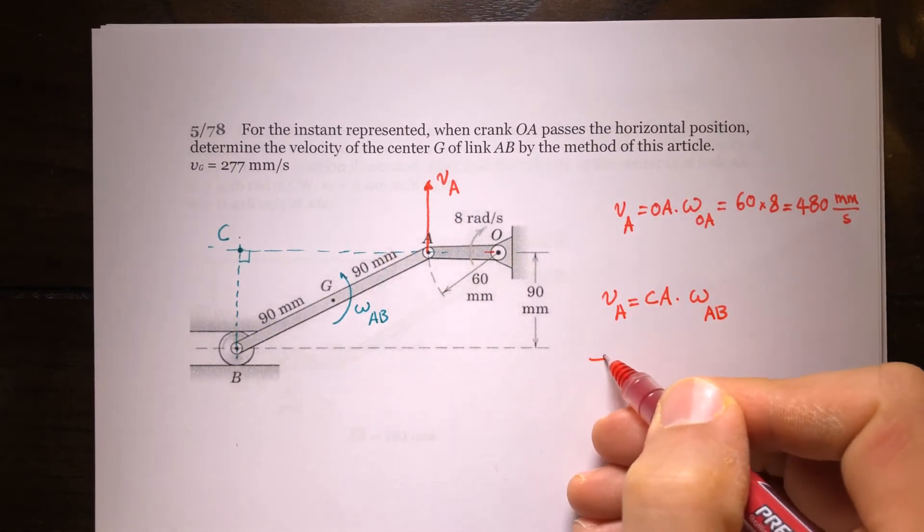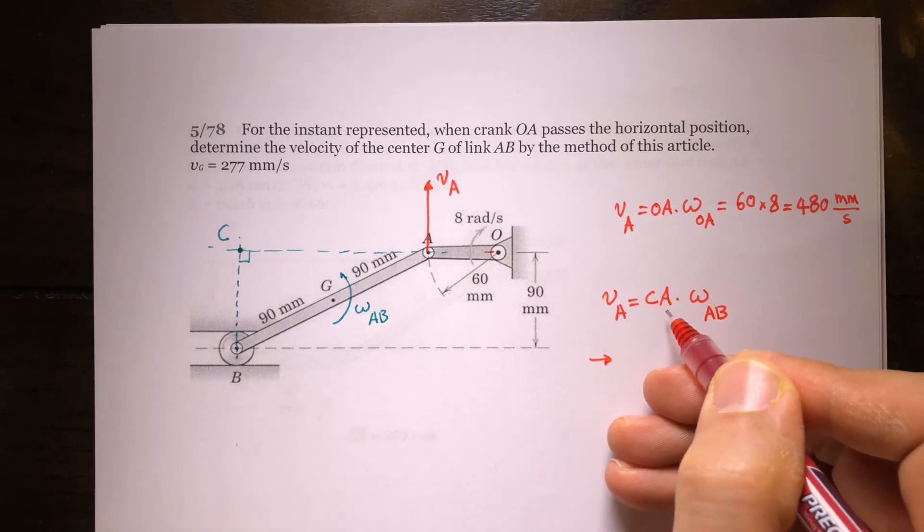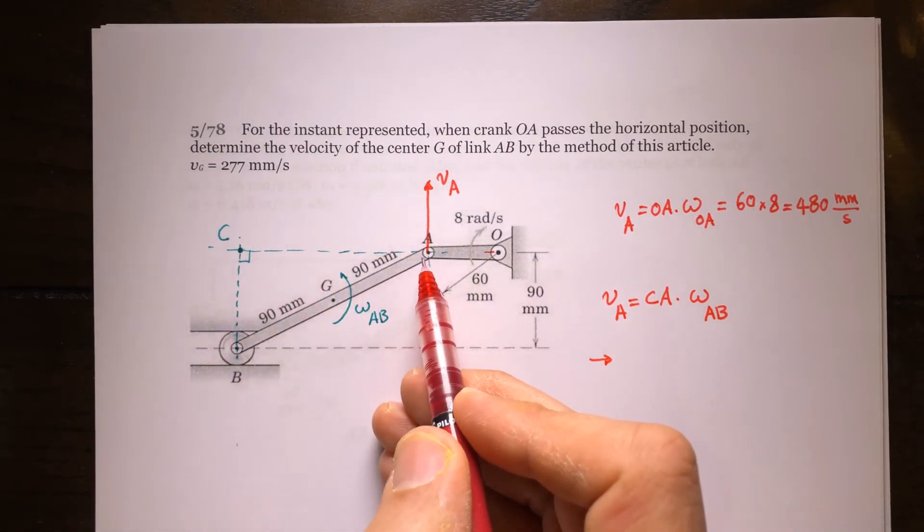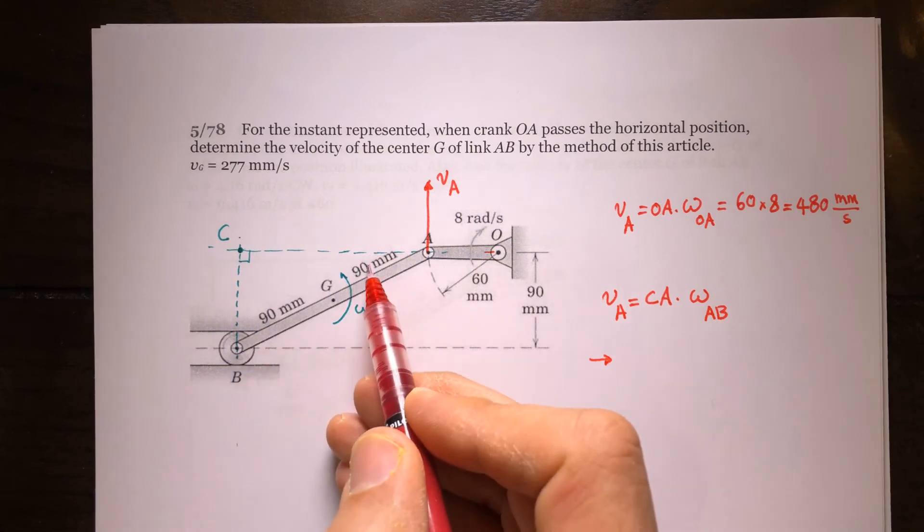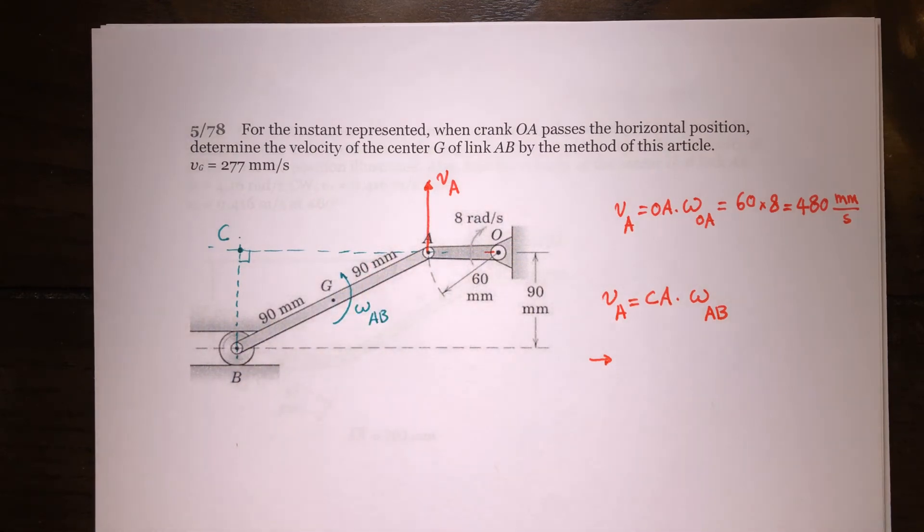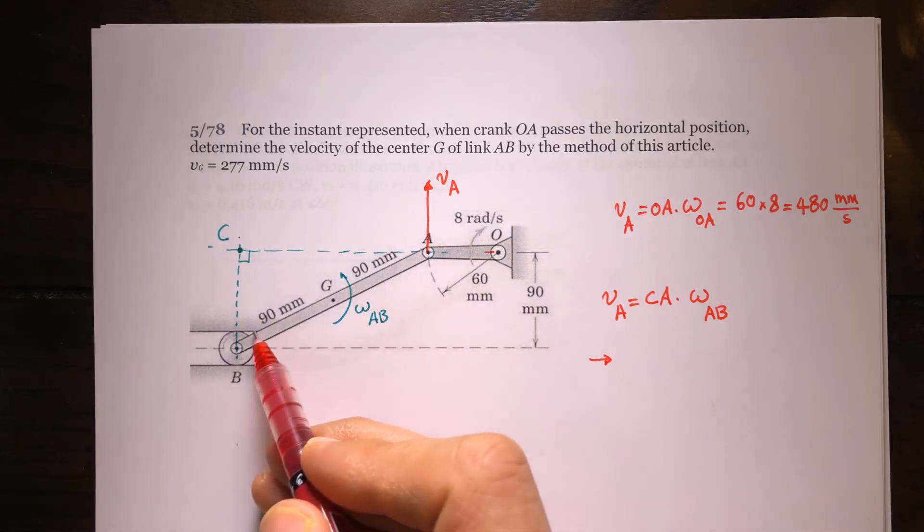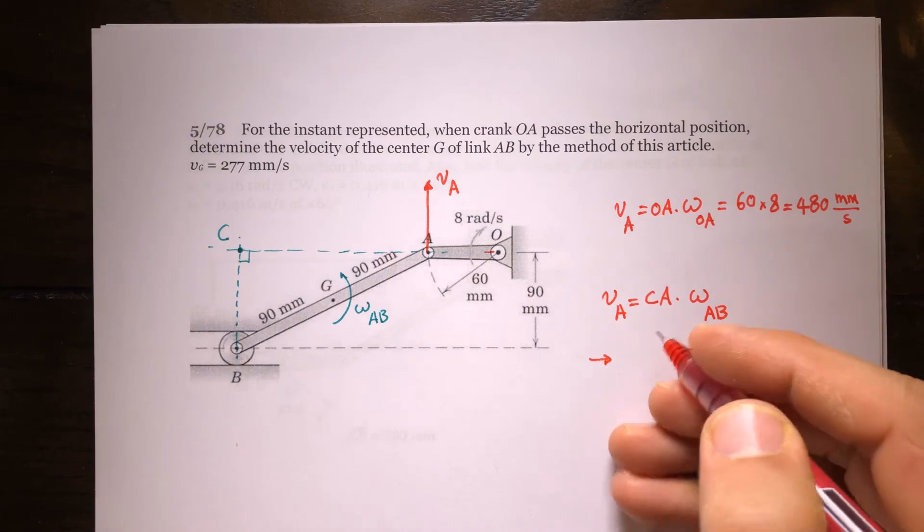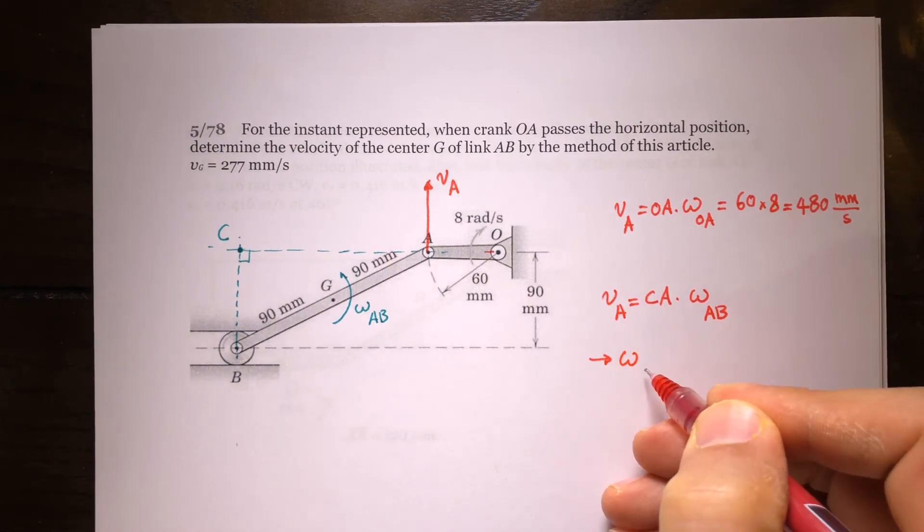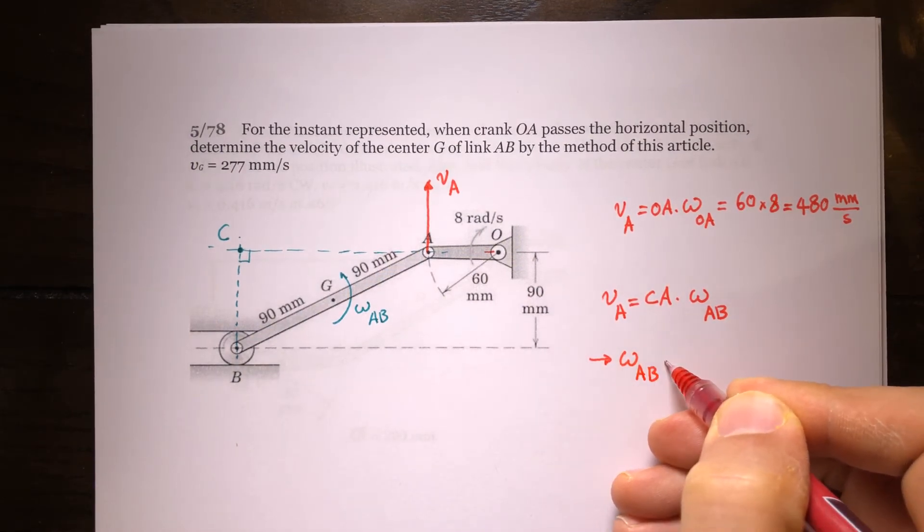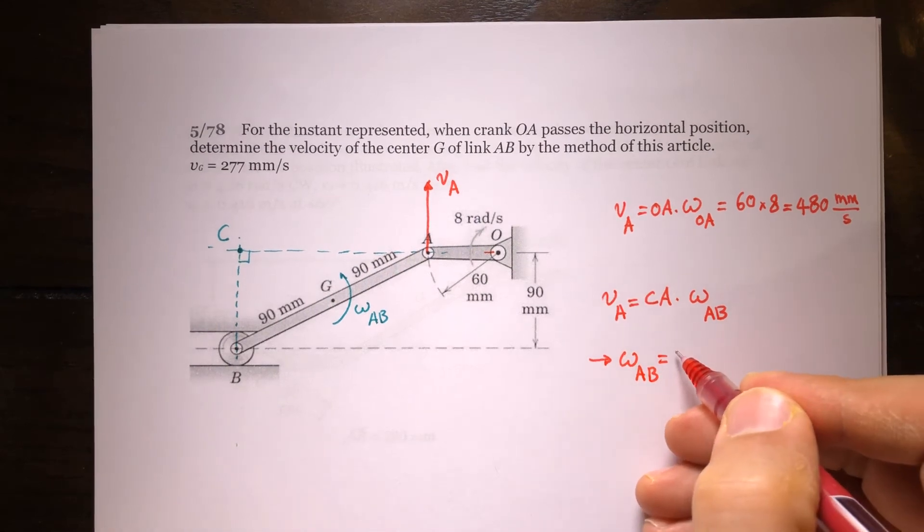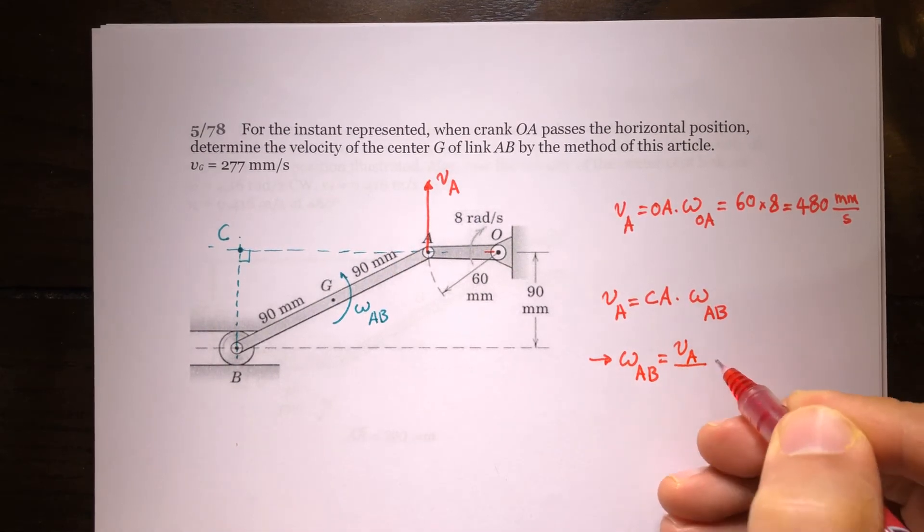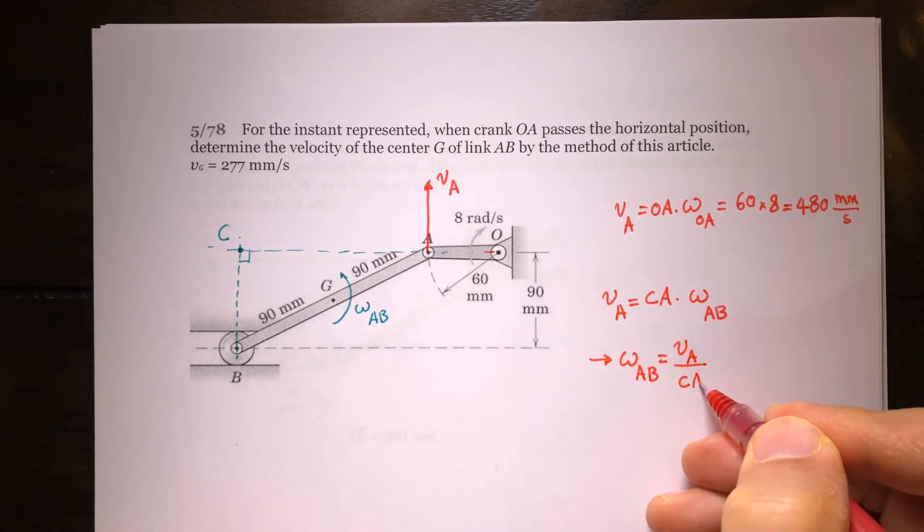From here, because I know the velocity of A, I know the length of CA is going to be 180 times cosine of this angle, or it's going to be square root of 180 squared minus 90 squared. So from there, omega AB is equal to velocity of A divided by CA.